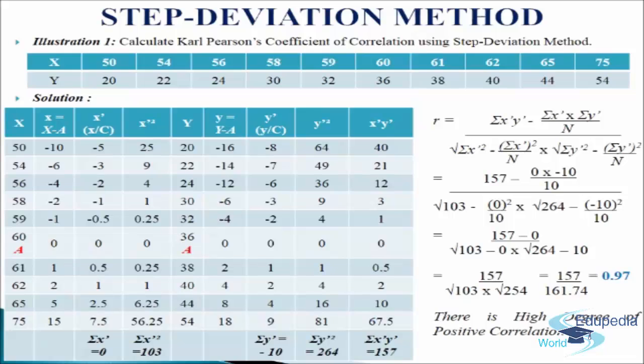In the next column we will write x dash square. So minus 5 square comes 25, minus 3 square 9, minus 2 square 4, minus 1 square 1, minus 0.5 square comes 0.25, 0 square 0, 0.5 square comes 0.25, 1 square 1, 2.5 square comes 6.25, and 7.5 square comes 56.25. We will add up the values and get sigma x dash square equals to 103.